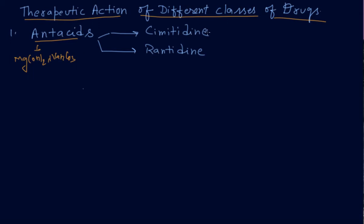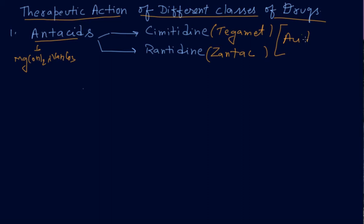Cimetidine is sold in the market under the brand name Tagamet. Another commonly used antacid is ranitidine, whose commercial name is Zantac. These antacids control the acidity produced in our stomach from eating acidic substances in day-to-day life.